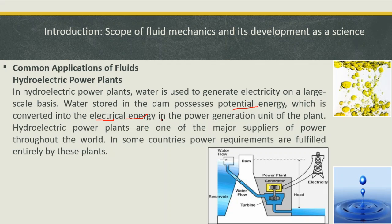This hydroelectric power plant is one of the major power supplies throughout the world. In some countries, the total power requirement is entirely based on hydroelectric power plants. The water flows with potential energy, is stored in the dam, comes and strikes the blades of the turbine, rotates the shaft of the turbine, and with the help of a generator the electricity is produced. So the conversion of potential energy to electrical energy takes place — that is the overall idea about hydroelectric power plants.